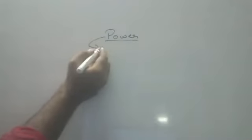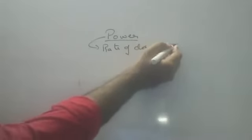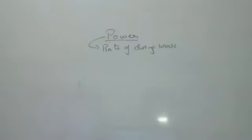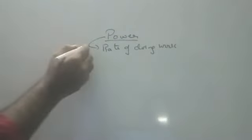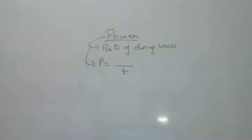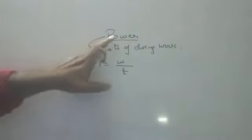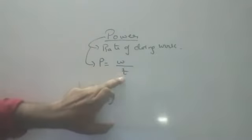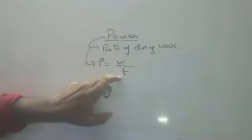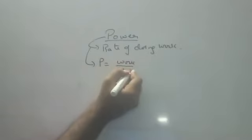Today we will discuss about power. Power is defined as the rate of doing work. Energy is the capacity to do work. In physics, 'rate' means 'divided by time,' so rate of doing work means work divided by time.